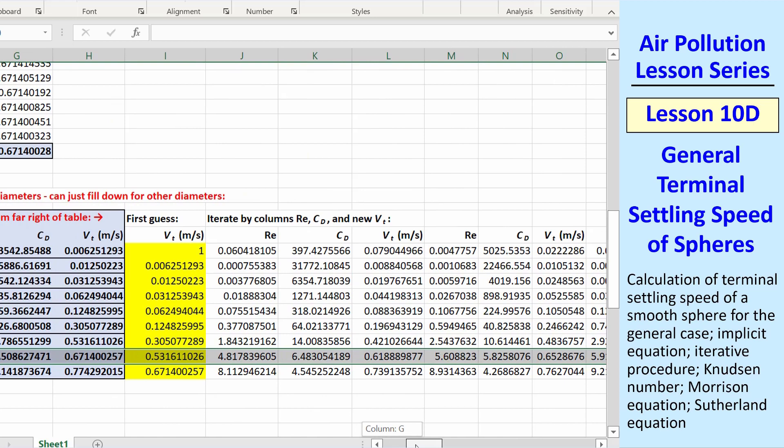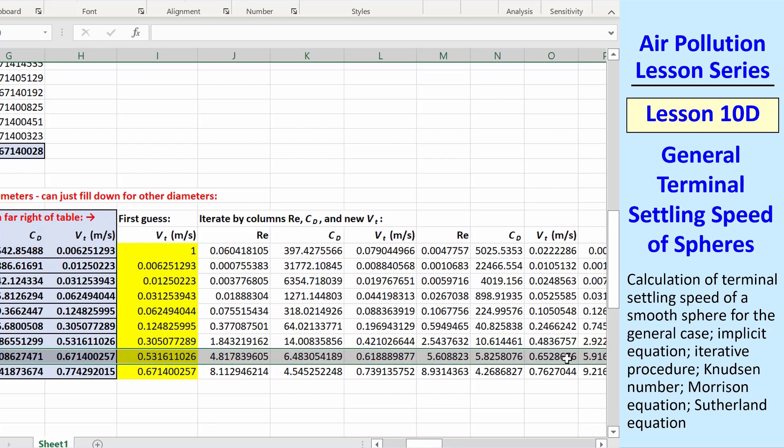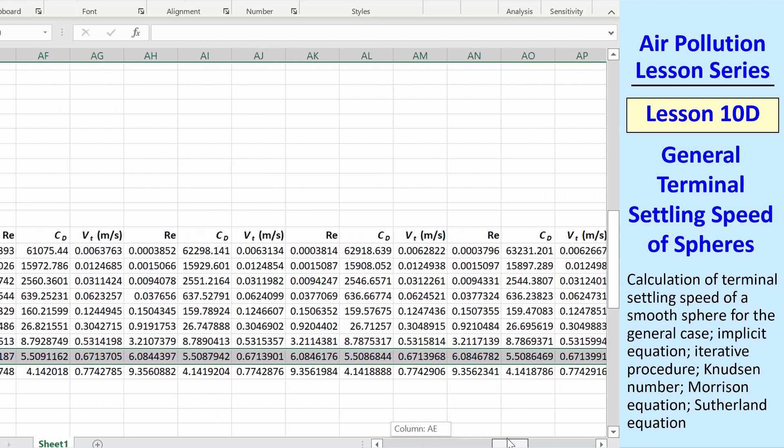As we go across, I calculate Reynolds number, Cd, and vt. Then I copy and pasted these three cells into the next three columns. And I continued that process several times.